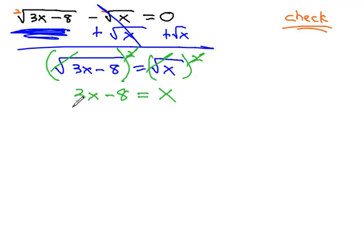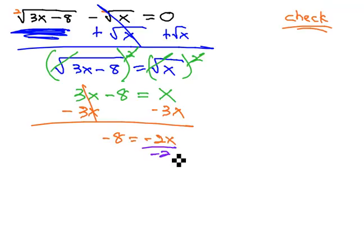And from here, it's a simple problem to solve. We quickly subtract 3x to get negative 8 equals negative 2x, and finally, divide by negative 2 to get x is equal to positive 4.